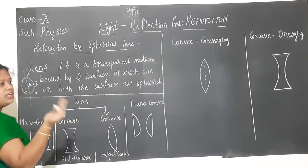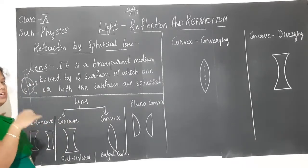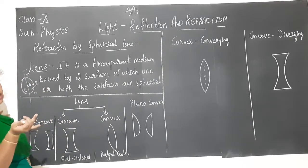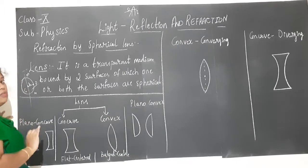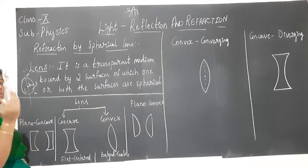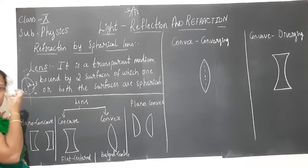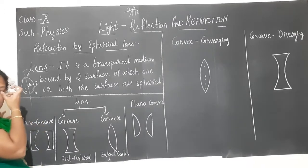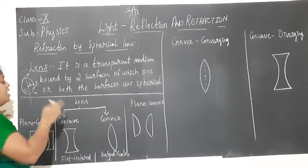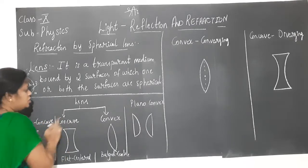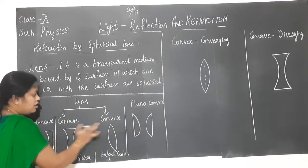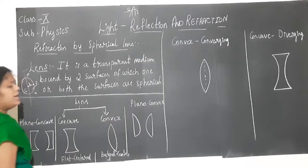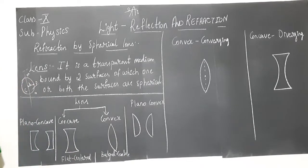Even spherical mirrors were of two types — convex mirror and concave mirror. The concave mirror was a converging mirror and convex was a diverging mirror. Similarly, when it comes to lenses, there are two types: concave lens and convex lens.